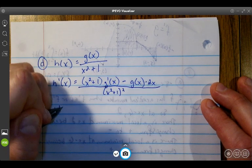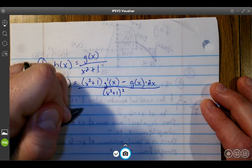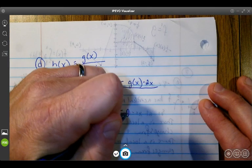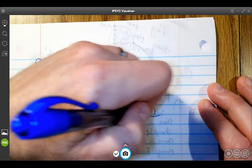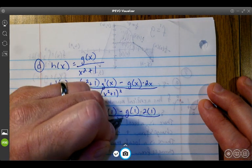Now we want to find H'(1). We're just plugging in 1. So I get (1² + 1) times g'(1) minus g(1) times 2 times 1, all divided by (1² + 1)².